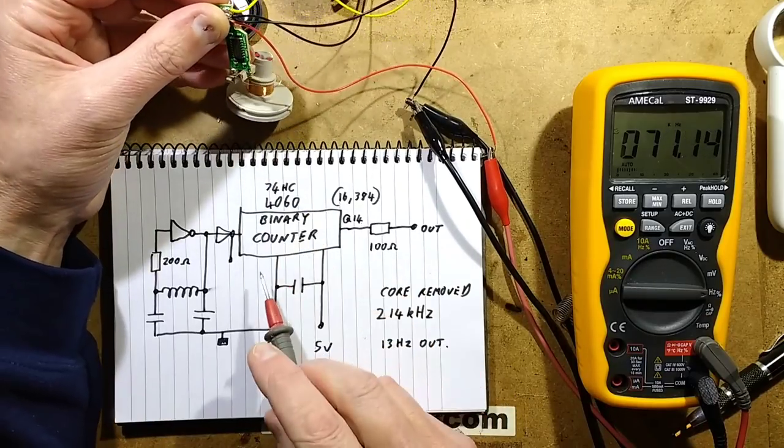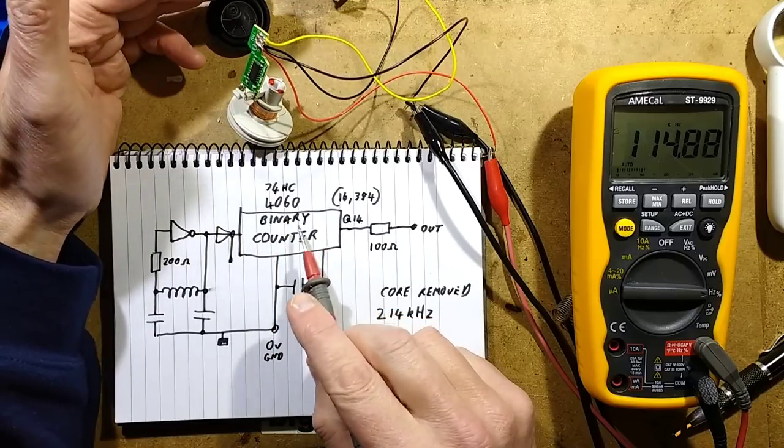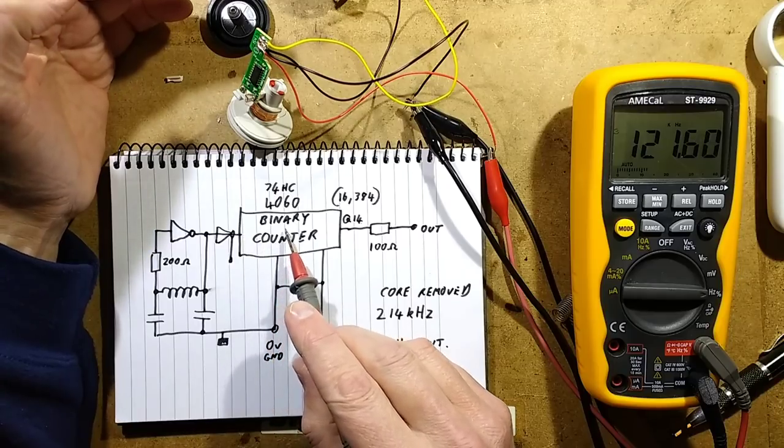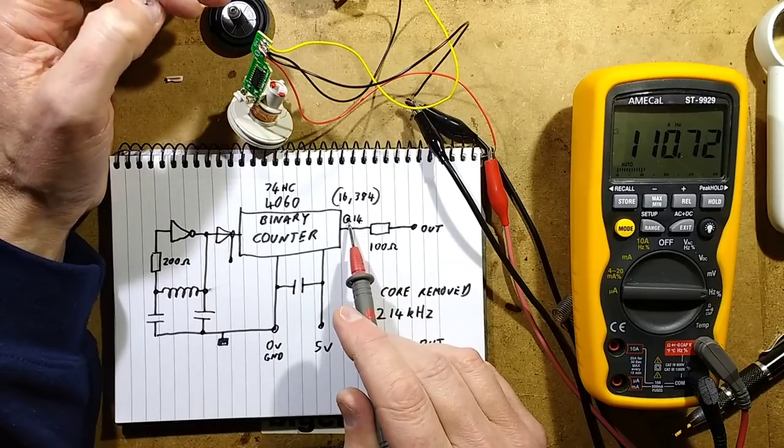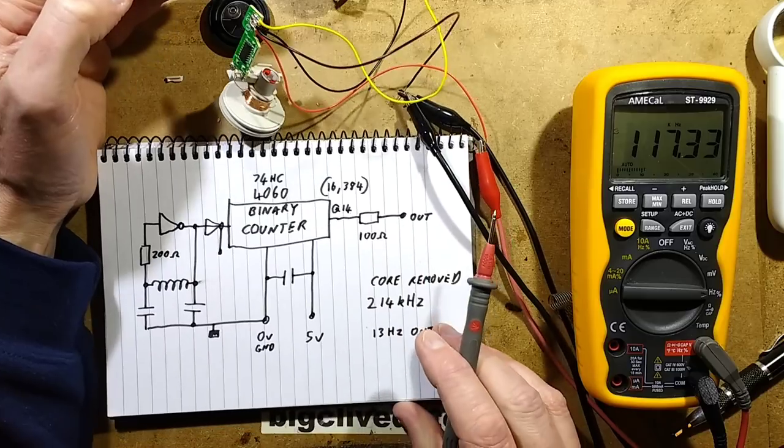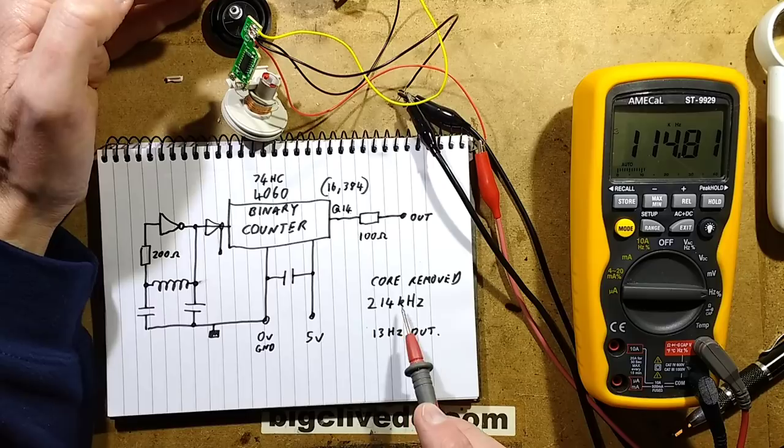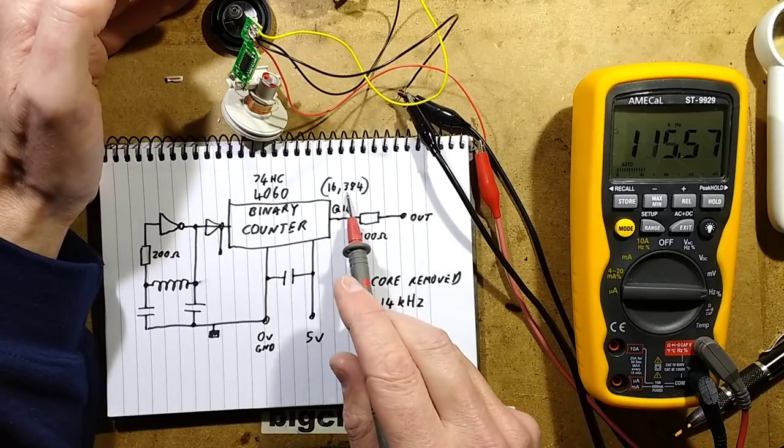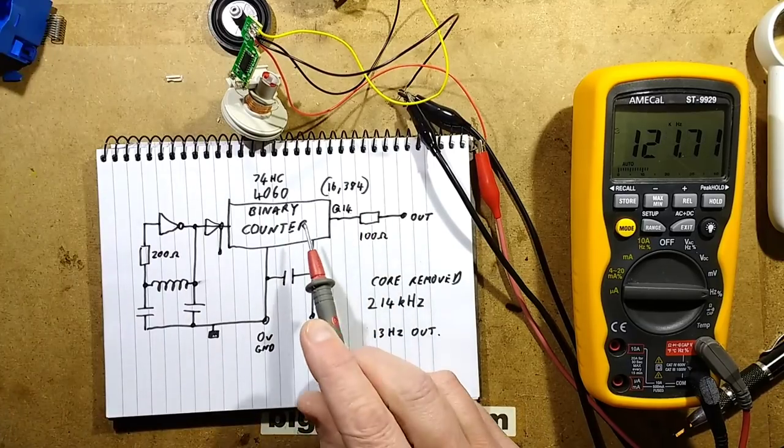214 kilohertz—the binary counter rapidly divides 1, 2, 4, 8, 16, 32, 64, 128, 256, 512, all the way down to the point that by the time it gets to Q14, it's divided by 16,384. If you divide, with the core completely removed, if you divide the 214 kilohertz (that's the highest frequency it will go with the core removed) by the 16,384 of the binary counter, you get about 13 hertz out. So that's how they're bringing it down.